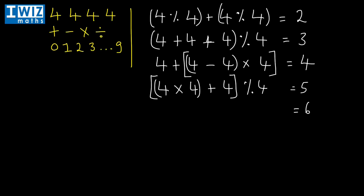In order to get to six, we write down four, four, four, and four. Six can be seen as four plus two. So if we do four plus four plus four — that's eight — and divide that quantity by four, we get two. So four plus two is six.